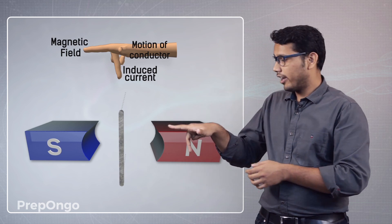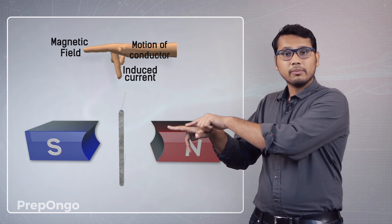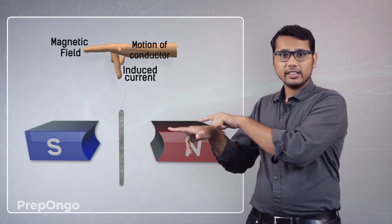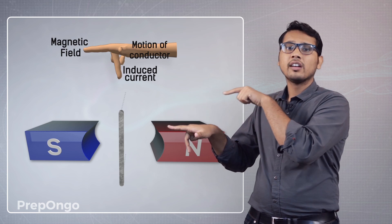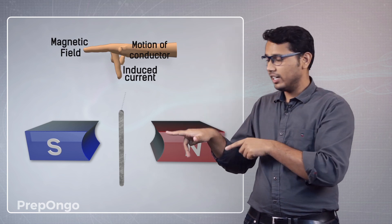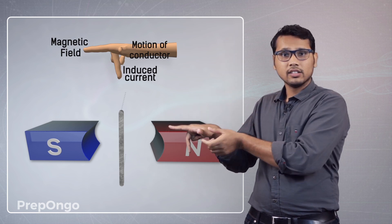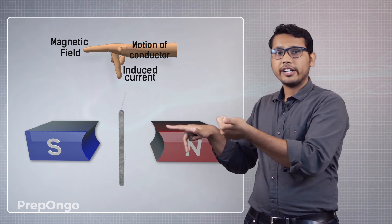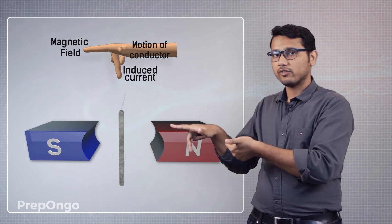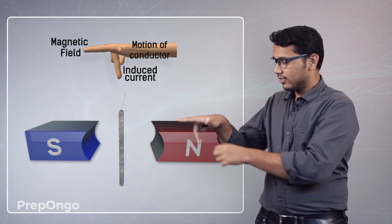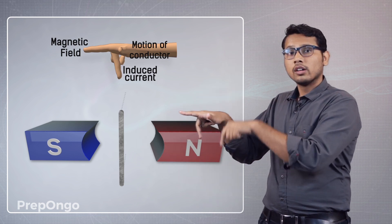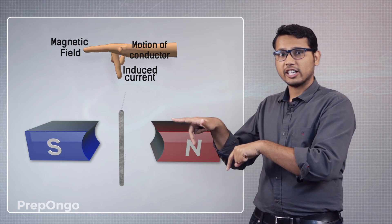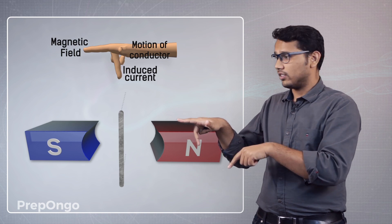Now my forefinger is pointing in the direction of the magnetic field and the thumb is pointing in the direction of movement of the conductor. So the second finger gives the direction of the current.